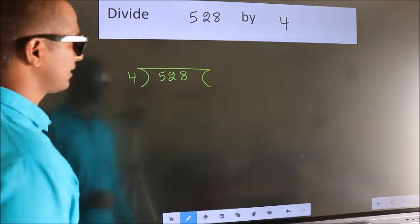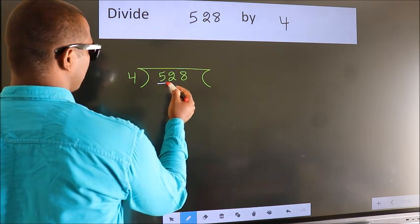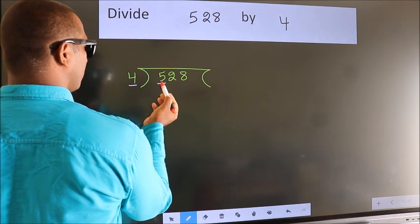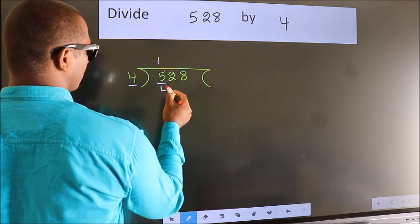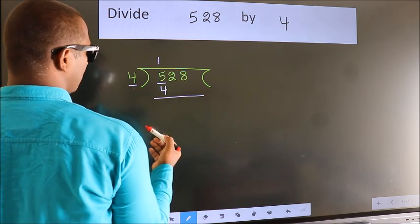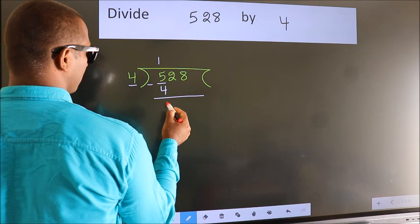Next, here we have 5, here 4. A number close to 5 in the 4 table is 4 once 4. Now we should subtract. We get 1.